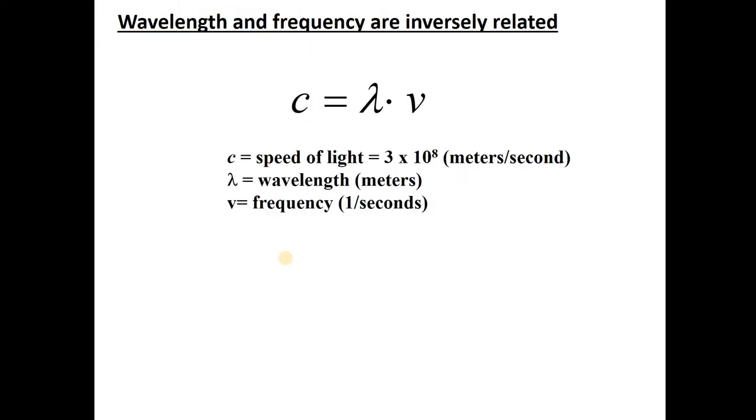So here is a compact formula that essentially captures what I just told you. The speed of light, C, is equal to wavelength times frequency. And here you can see the units that we commonly use to describe those things.